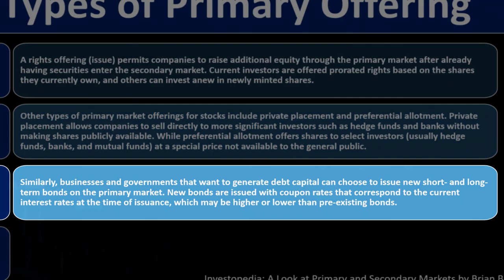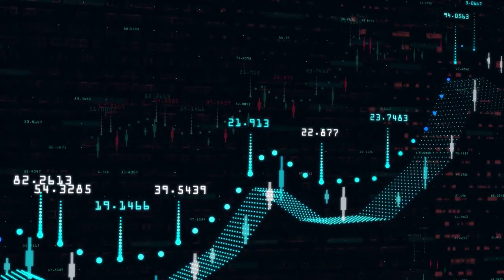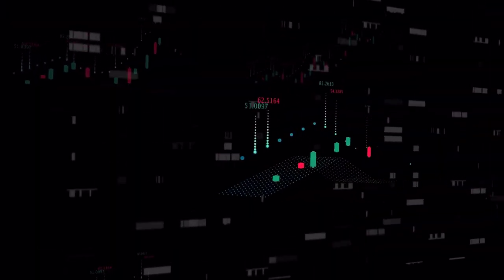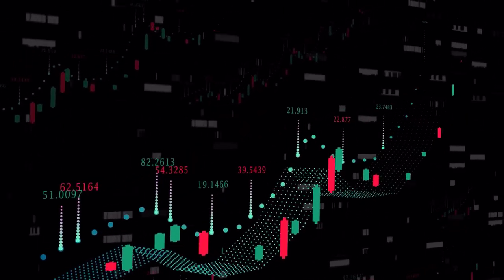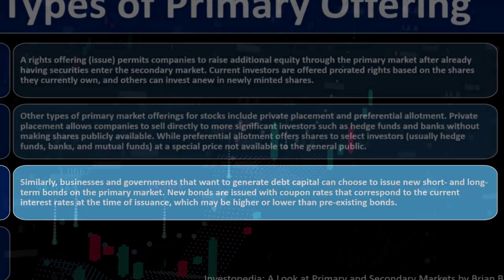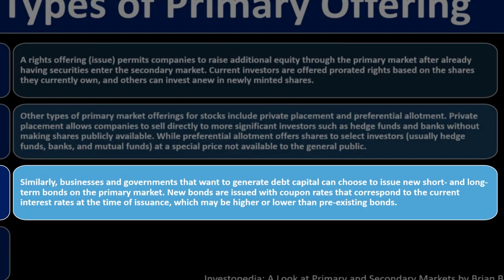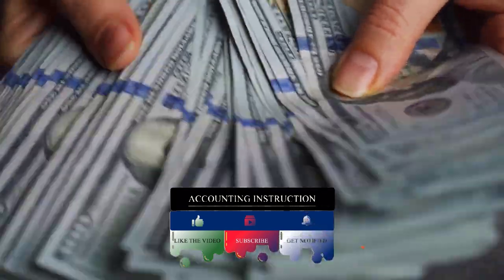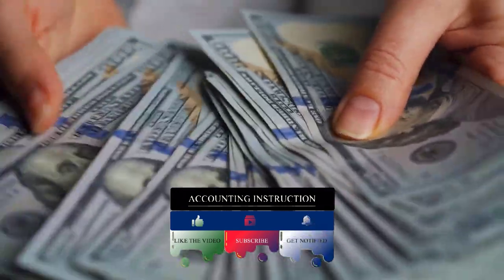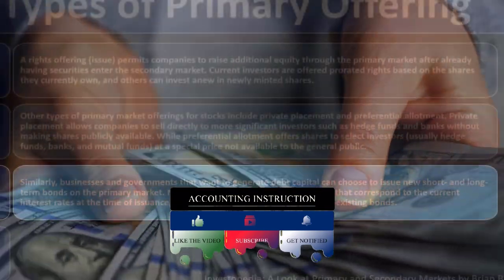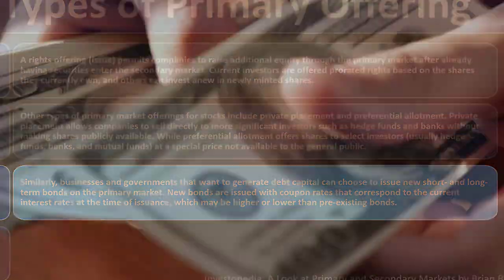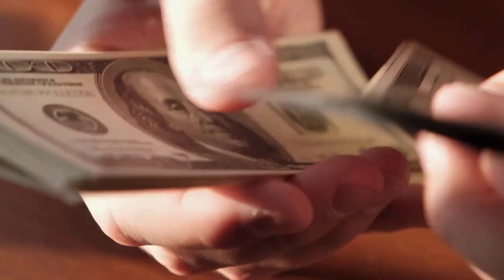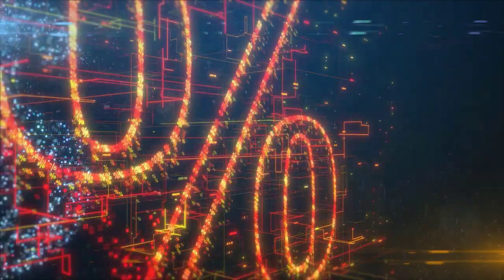Similarly, businesses and governments that want to generate debt capital can issue new short- and long-term bonds on the primary market. New bonds are issued with coupon rates that correspond to current interest rates at the time of issuance, which may be higher or lower than pre-existing bonds. A company can issue bonds to the public rather than going to a bank — it's a debt situation. If you buy bonds directly from the company, you might buy them at par value, and then as market conditions change over time, you could sell the bonds on the secondary market at a premium or discount.